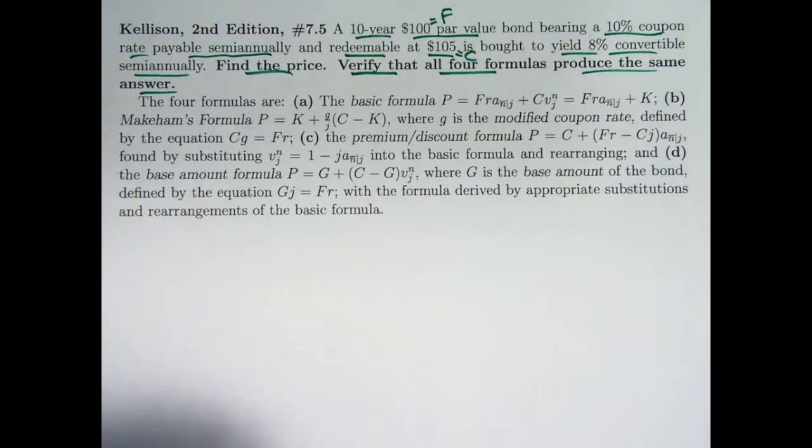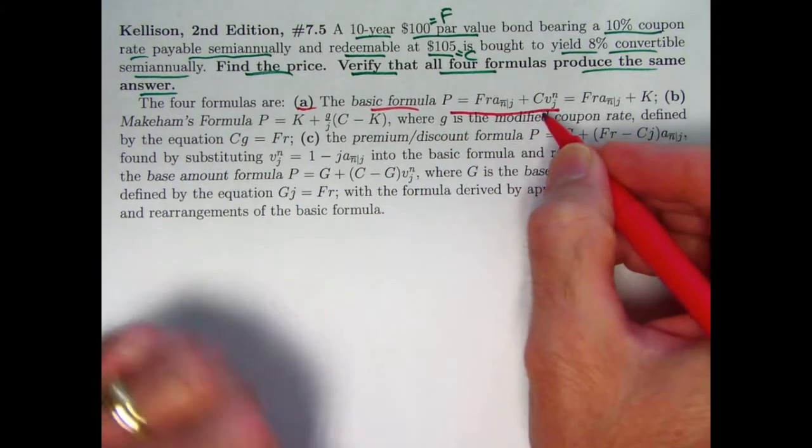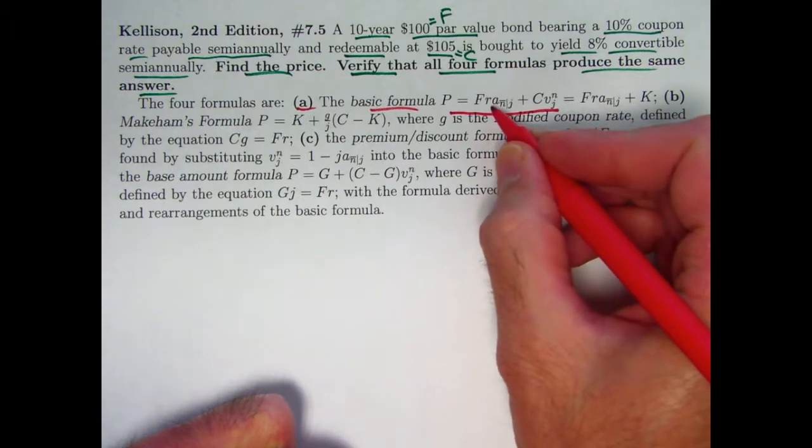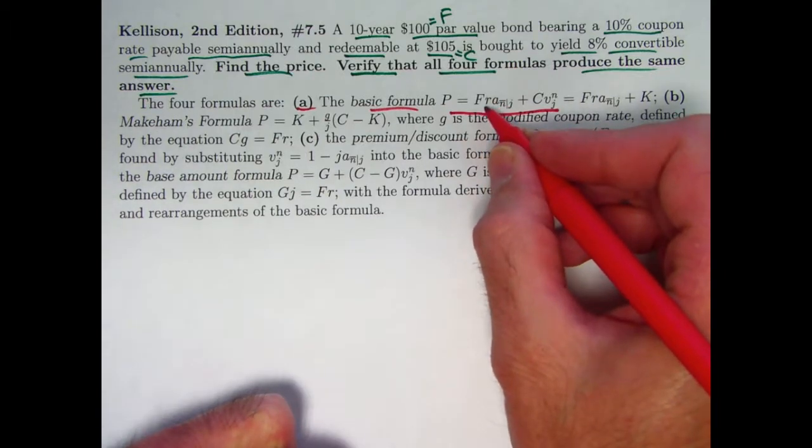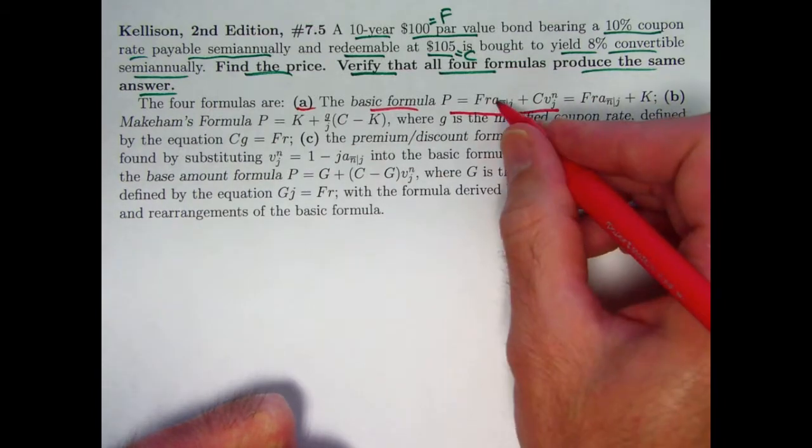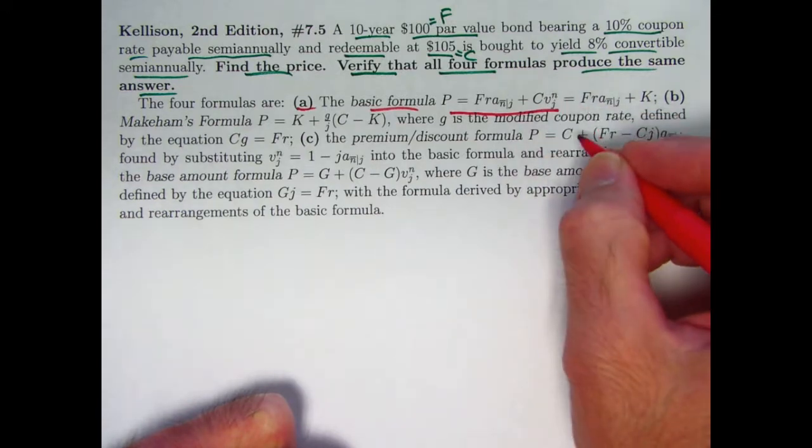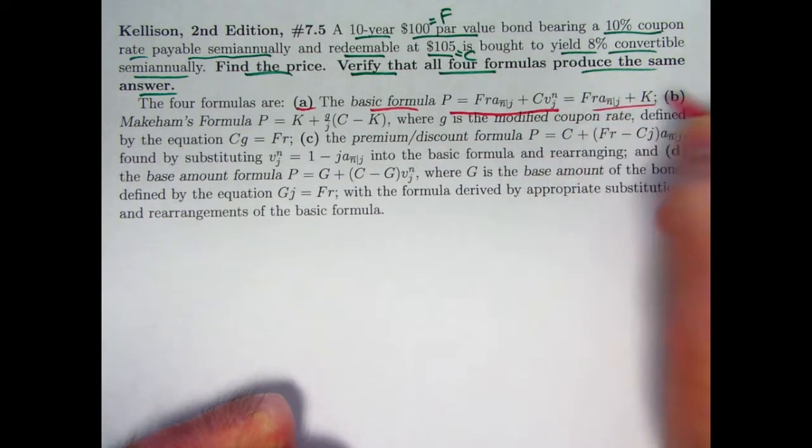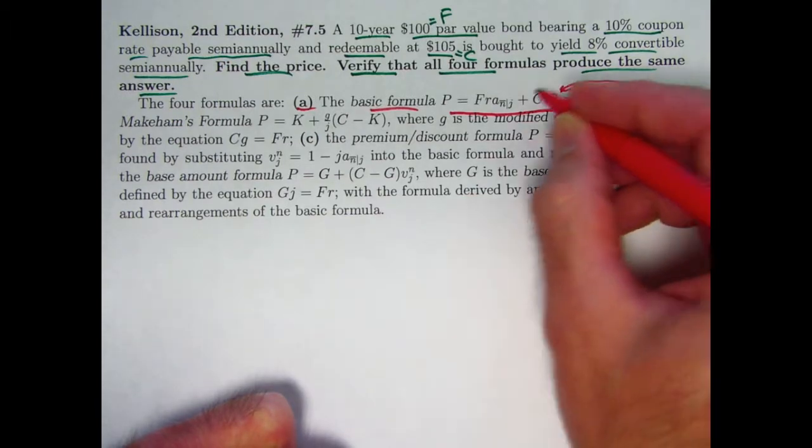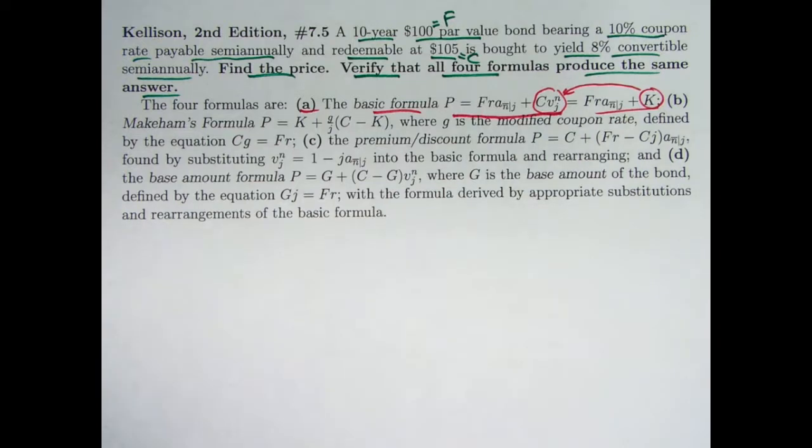Having lots of formulas is handy when you need to be able to calculate lots of things. So what are these formulas? Let's start with A, the basic formula. We wrote it initially like this. This is, first of all, the present values of the coupons. F times R is the coupon amounts. We're getting N of those at yield rate, semi-annual yield rate J. This is your present value of an annuity immediate symbol. Then we add on C times V to the N, the redemption amount discounted back in time to time zero.